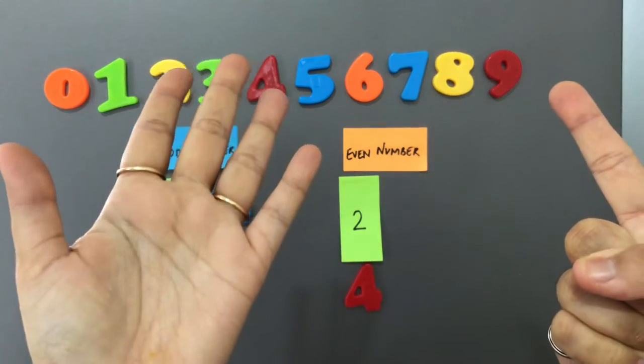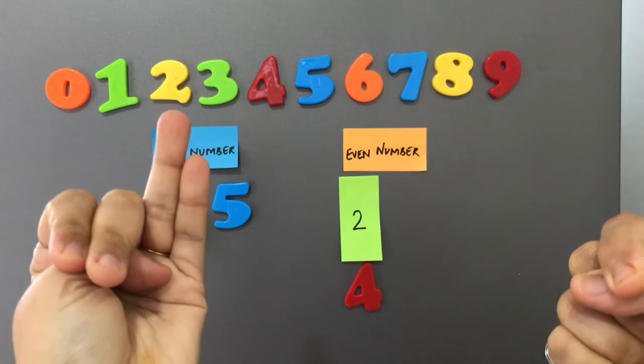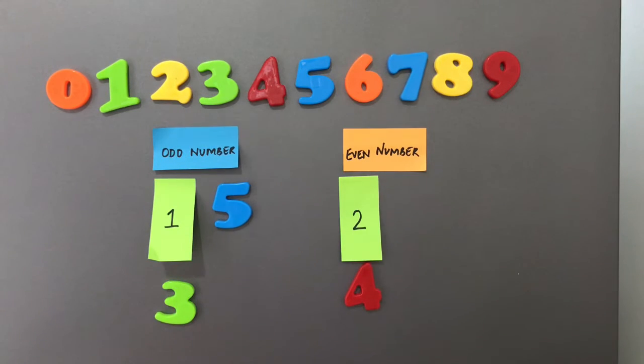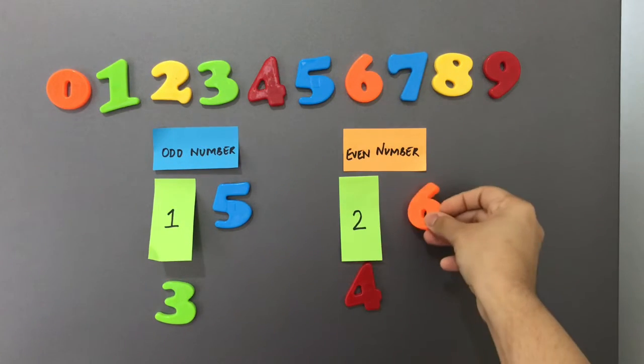Number six. These two form a pair. These two form a pair. These two form a pair. No friend left alone.